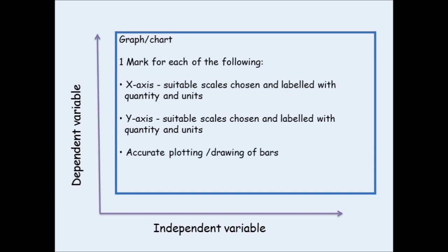A third mark is given for accurate plotting of points if you're doing a line graph, or the accurate drawing of bars in a bar chart. A fourth mark is given if you are drawing a line graph—you must draw a suitable line of best fit. If you're doing a bar chart, then each of the bars needs to be individually labeled.